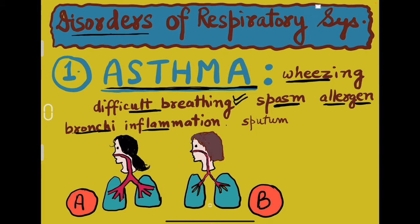Look at diagrams A and B — two images. Which of the two is suffering from asthma presently? If you compare, person B has much narrower passages. Why? Because swelling has occurred, and due to the swelling the walls have become thicker, making the cavity narrower ultimately. All the tubes — all the bronchi and bronchioles — are narrowed down, causing difficult breathing for her.